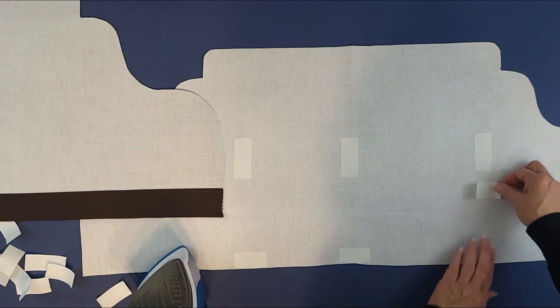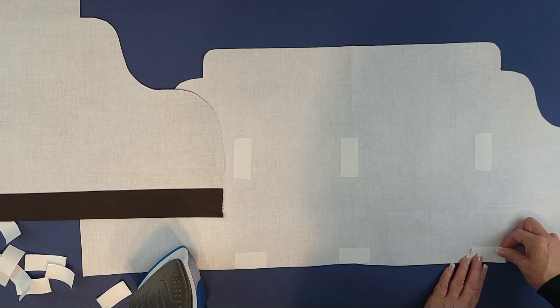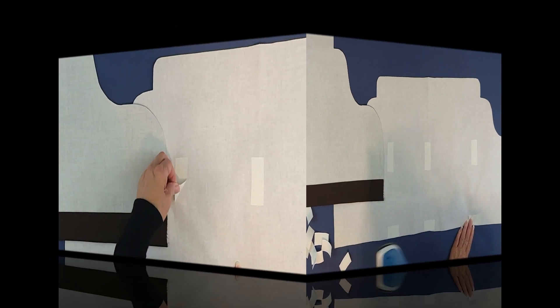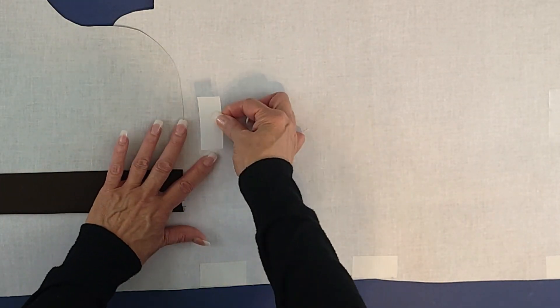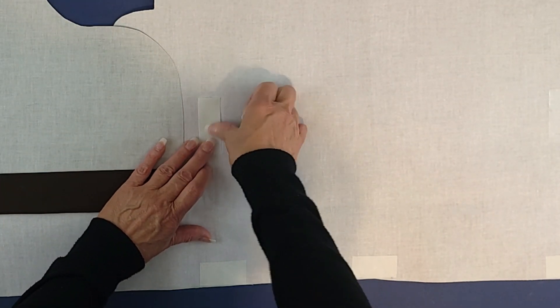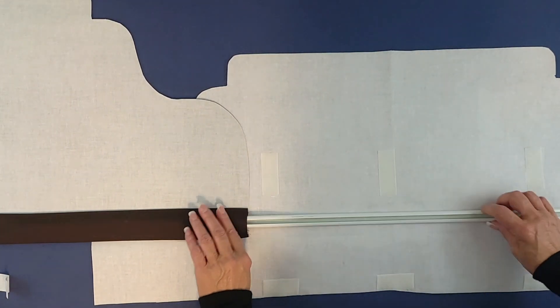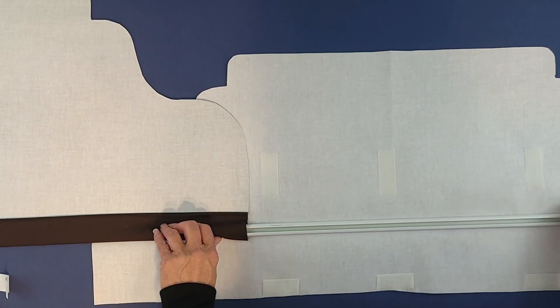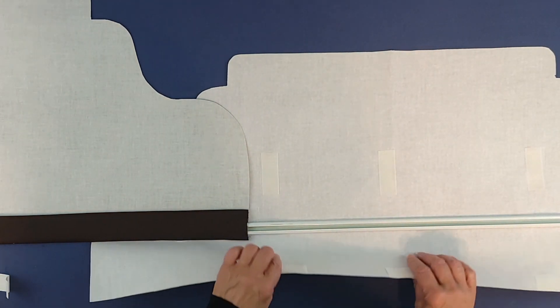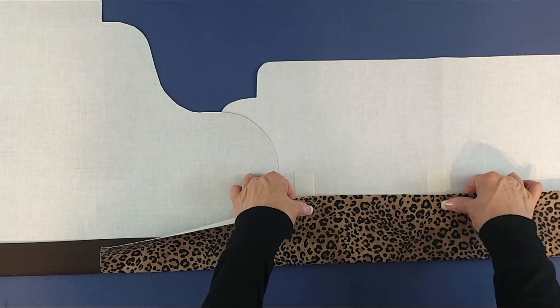Once all the heat and bond is positioned and fused, and the paper is cooled, peel the paper back and stick the Velcro to those sections. This will hold long term. Otherwise, if you don't use the heat and bond, it will pull right off the lining. You won't be able to separate the panel without removing the Velcro fasteners.